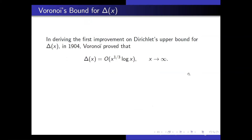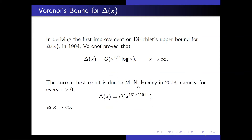Voronoi proved in 1904 that Δ(x) = O(x^{1/3} log x) as x → ∞. The current best result, as far as I know, is due to Huxley. Sander Arajan has replaced the x^ε by a quotient of logarithmic terms.